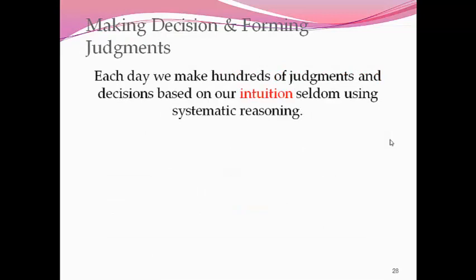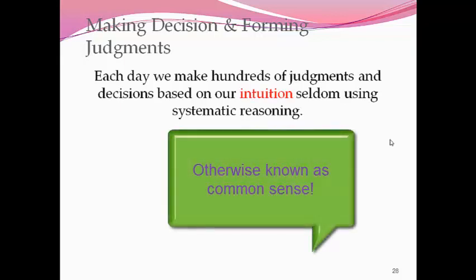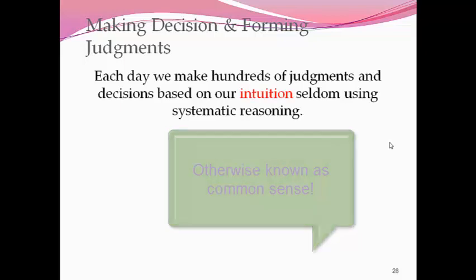When we make decisions and form judgments, we do this hundreds of times a day without really being aware of it, and most of those decisions are probably based on intuition — which means we don't use systematic reasoning, we just have an intuitive idea that something would work. One example of intuition in cognition is the overconfidence tendency: a tendency to be more confident in our judgments than correct, and to overestimate the accuracy of our beliefs and judgments.